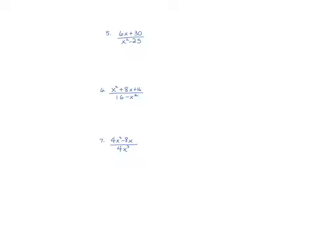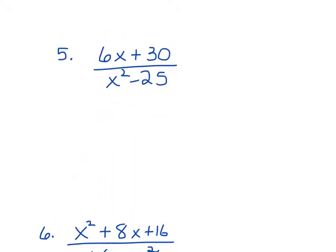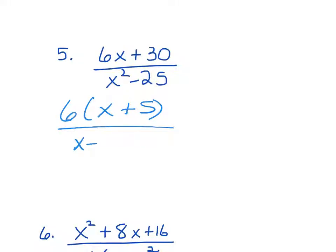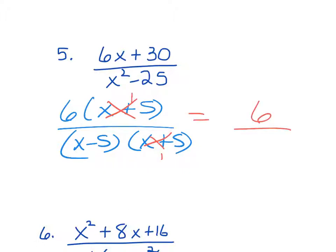Next example: I need to factor the numerator. The GCF is 6, so 6x ÷ 6 = x and 30 ÷ 6 = 5, giving 6(x + 5). The denominator factors using difference of two squares into (x - 5)(x + 5). The (x + 5)s cancel to 1s, so 6 × 1 is 6 and (x - 5) × 1 is x - 5. The final answer is 6 over x minus 5.